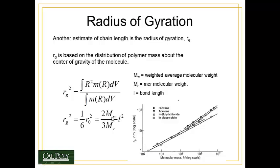More importantly, Rg² is equal to 2Mw divided by (3 times the average mer weight), times the bond length squared. When you look at Rg as a function of molecular mass Mw for some simple molecules, you see a linear fit of the data, which is exactly what you'd expect from this equation — a linear fit with slope equal to 2/(3·mer weight)·L².